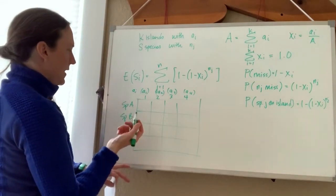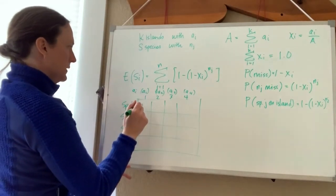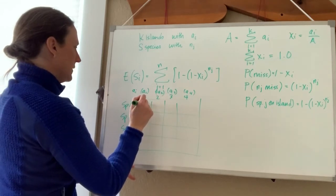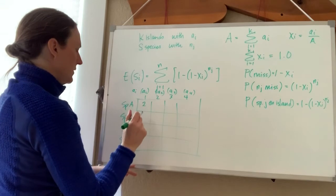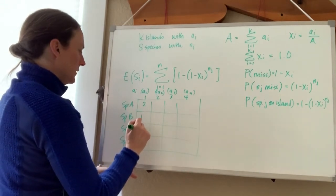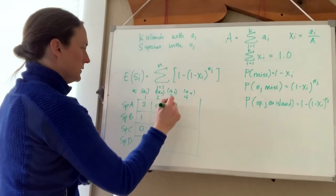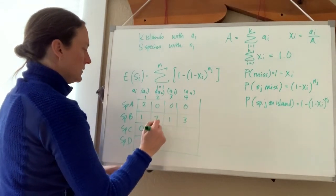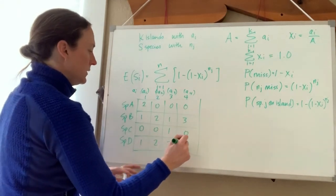For species A on each island, there might be 2 individuals, then 0, 1, 0. Species B: 0, 2, 1, 3. Species C: 0, 1, 0, 2. Species D: 2, 0.